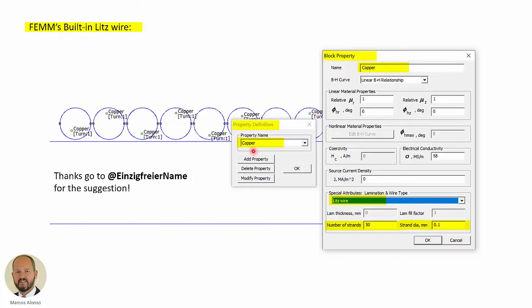Because when we are defining a property, for example here, copper, on the block property window, we have a possibility to specify special attributes. If the material is laminated or the type of wire, there is a specific option for Litz wire. And here then, below, we can introduce the number of strands and the diameter of each strand.